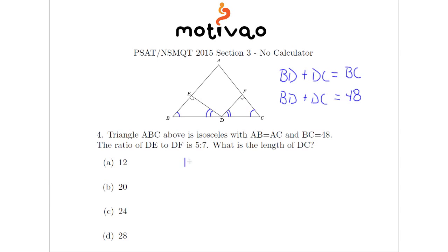So BD to DE is equal to DC to DF by similar triangles. Now how do I use this information? Well we know DE to DF is 5 sevenths.